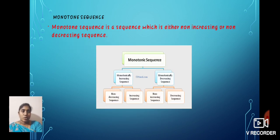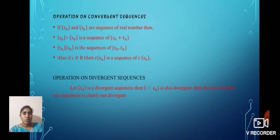Monotone sequence. A monotone sequence is a sequence which has either non-decreasing or non-increasing terms. Sequences satisfying either of these conditions are called monotone sequences.